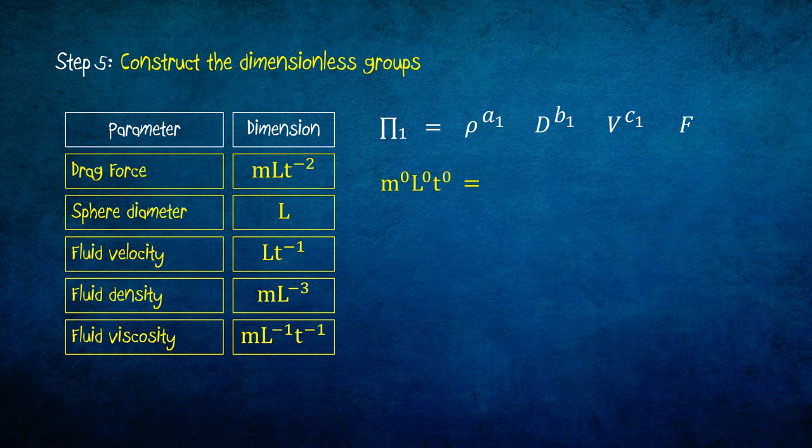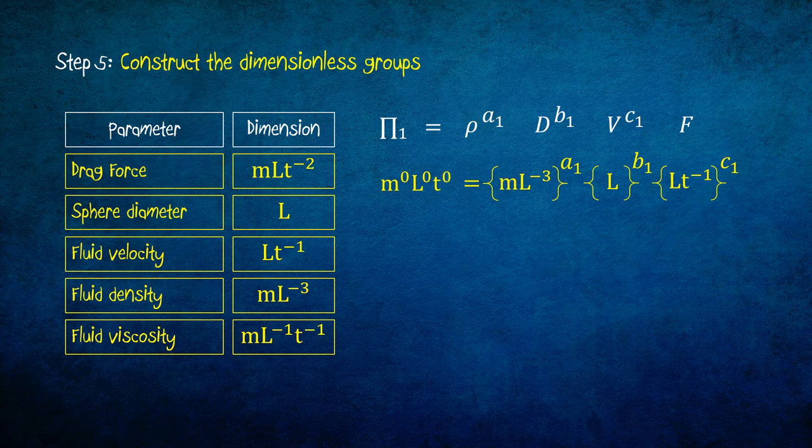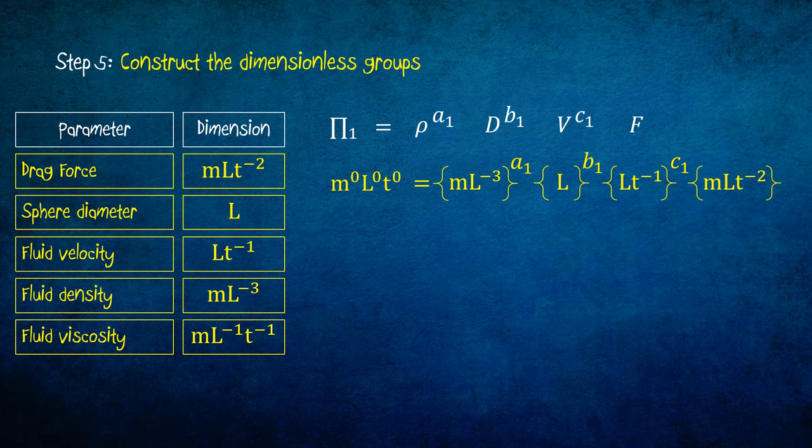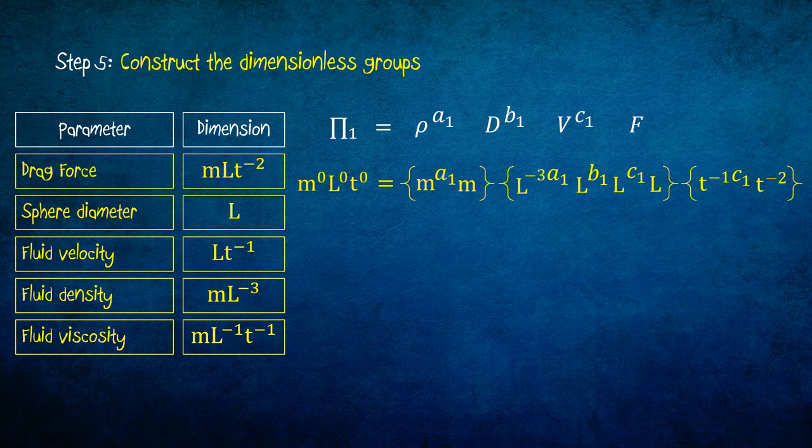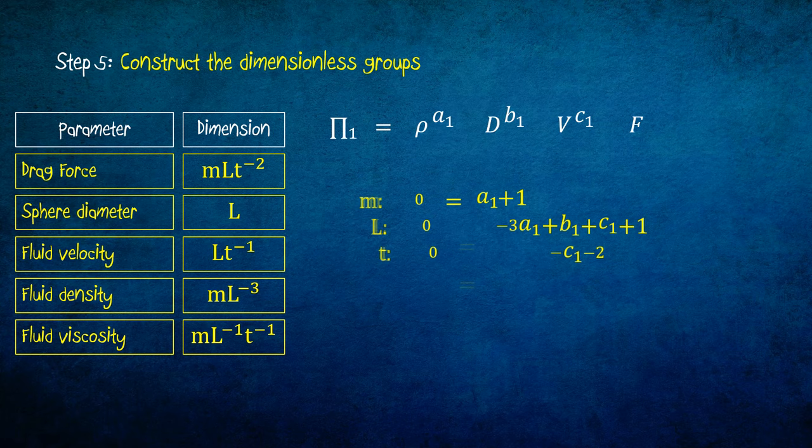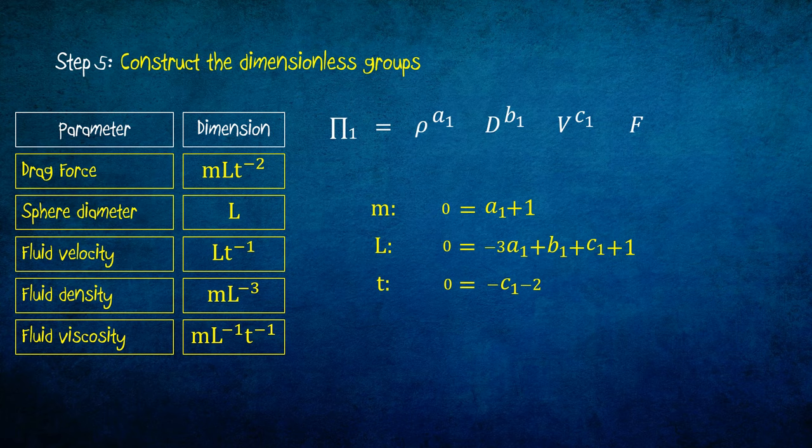We replace rho with its dimension. Sum up the power for each dimension. From here we obtain three equations with three unknowns. The three equations are equation from the power of m, equation from the power of l, and equation from the power of t. And the three unknowns are a1, b1, and c1.